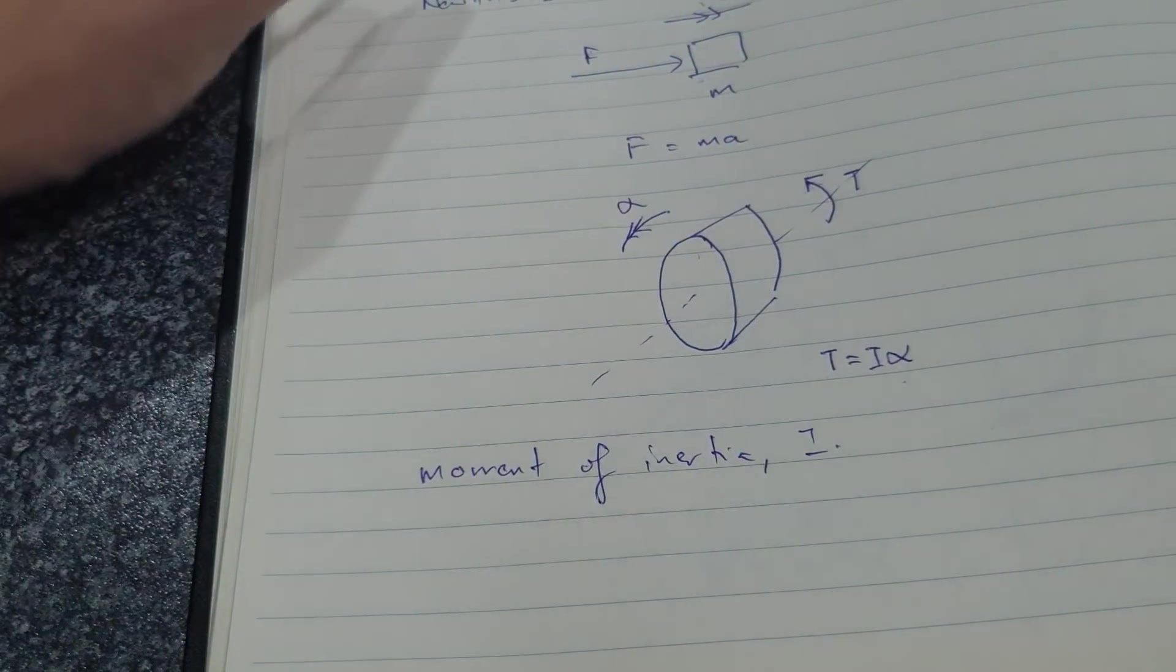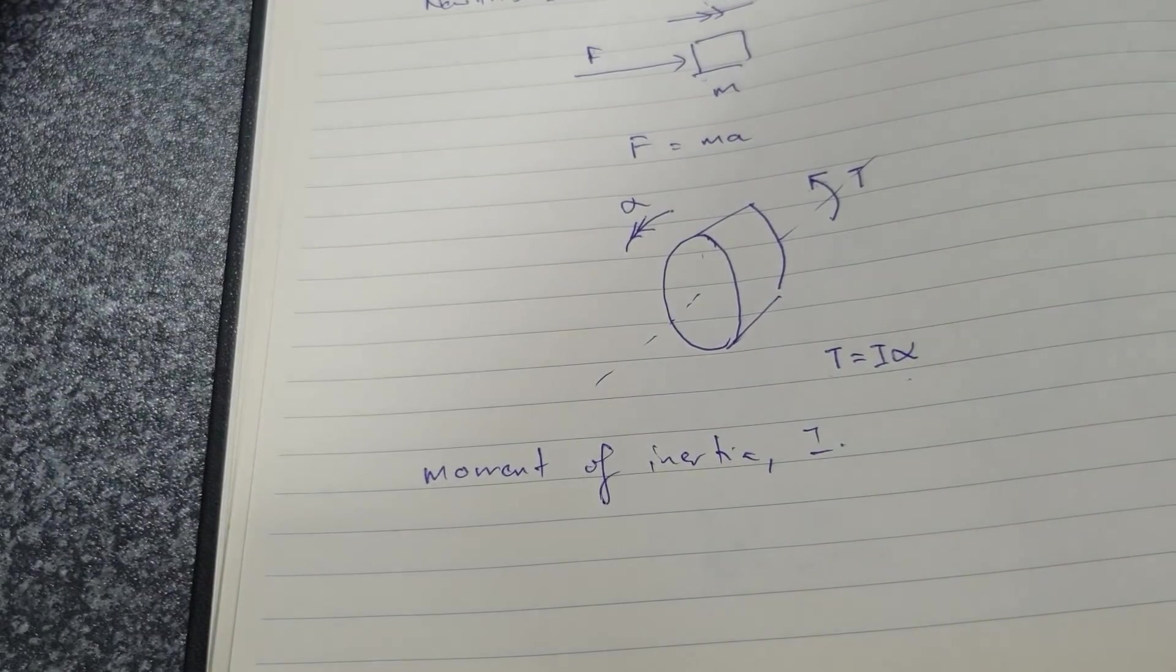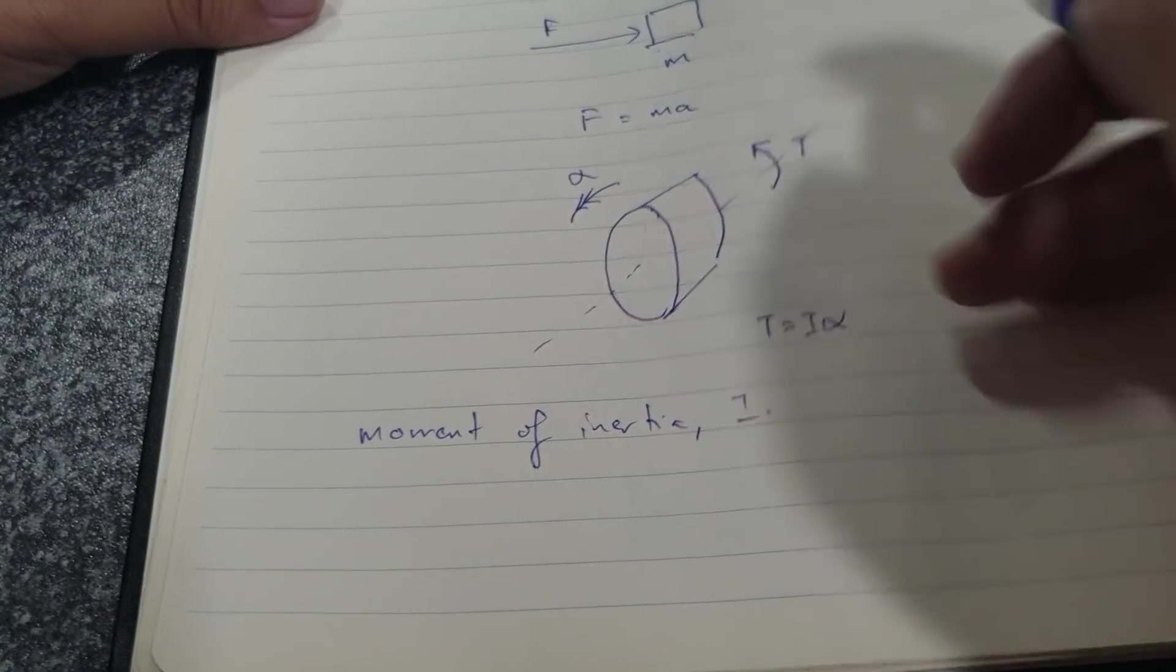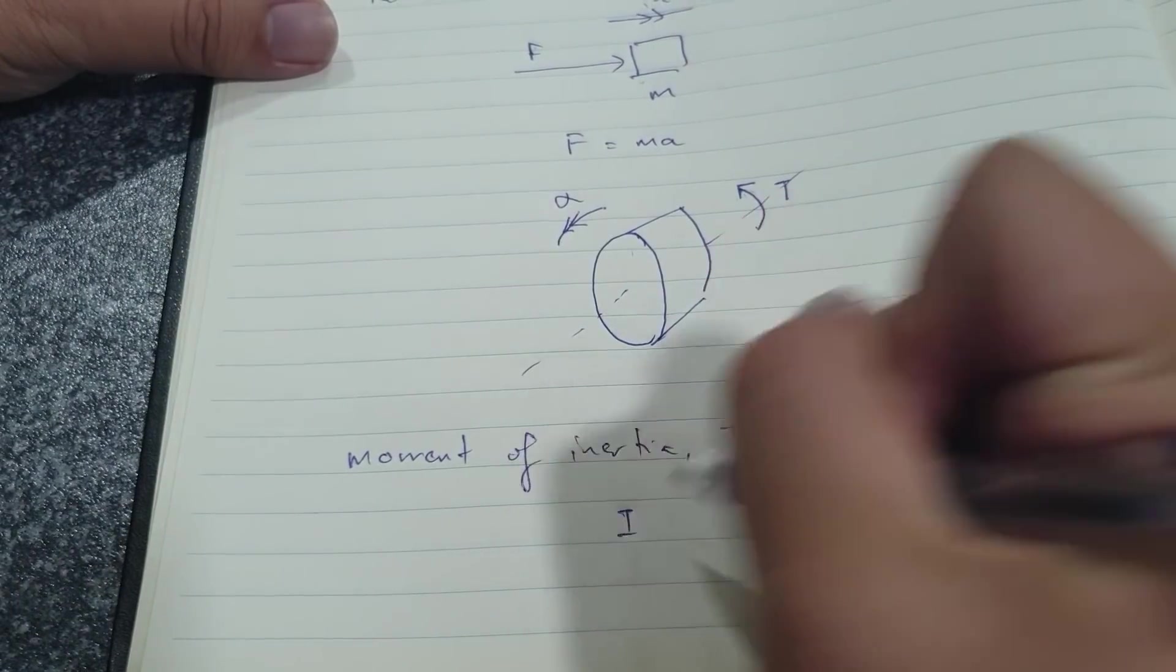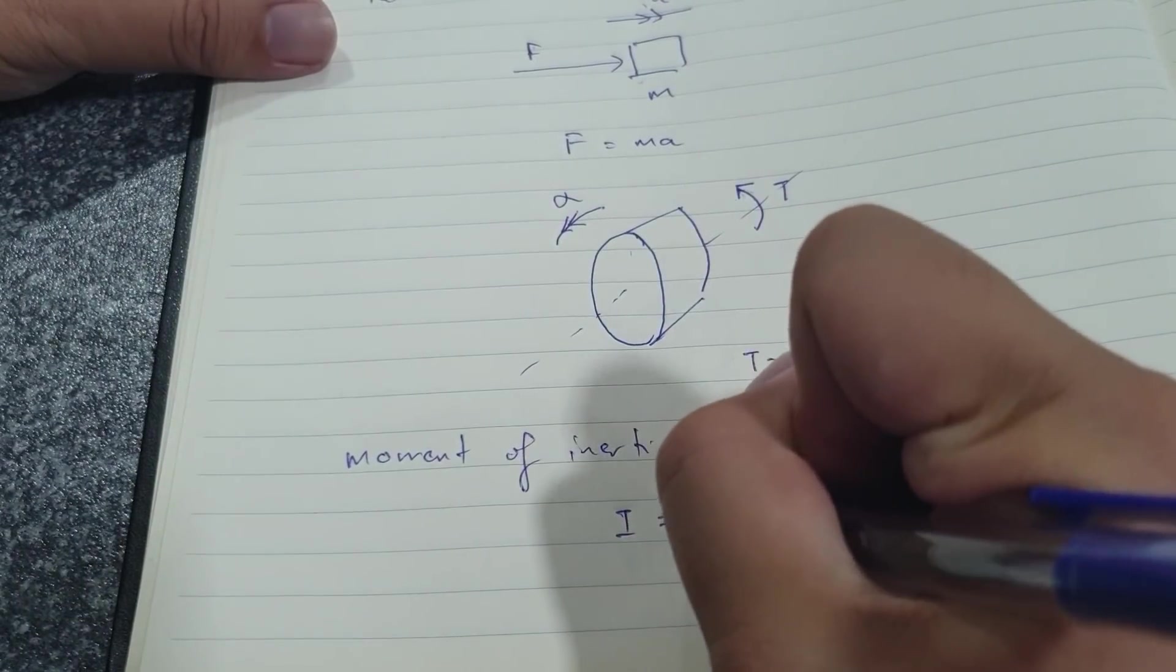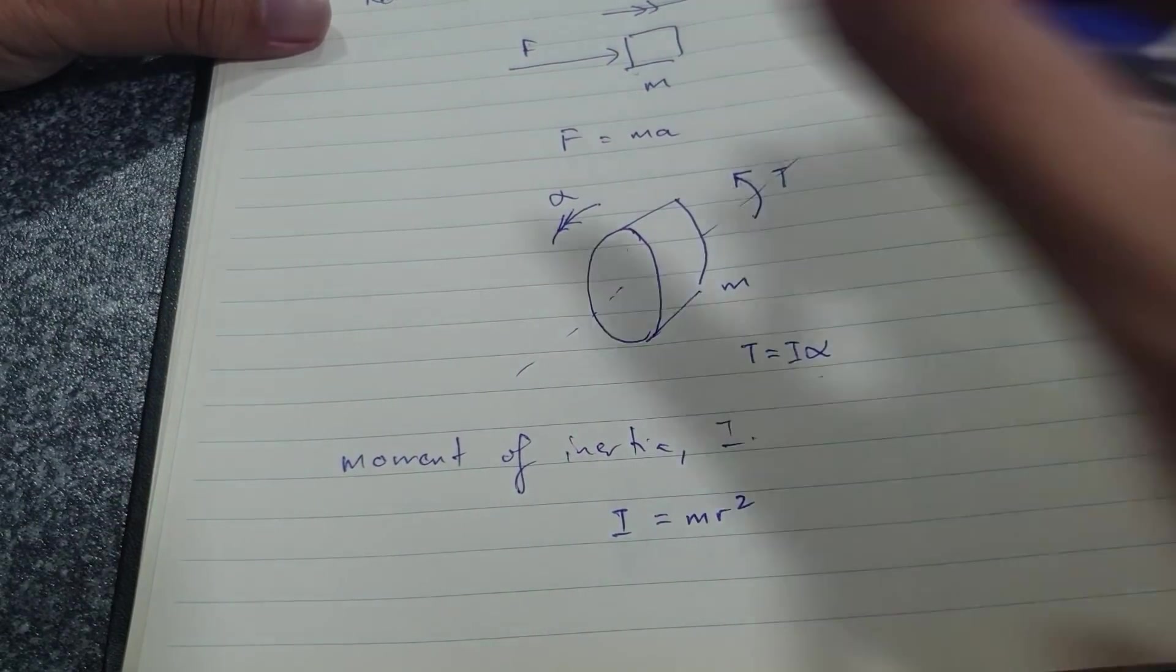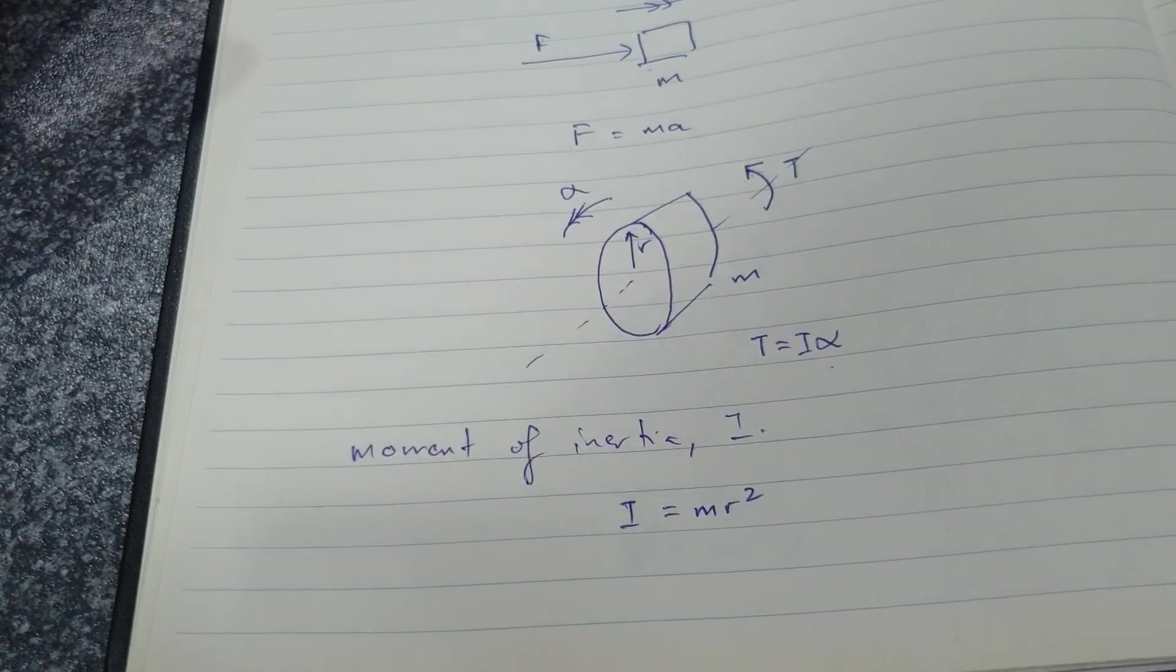Okay, moment of inertia, simply put, you can describe it as the rotational mass of an object about a given axis. So physicists have worked out that in the case of a cylinder, your moment of inertia in this system is I equals to mr² where m is the mass of the cylinder and r is the radius of the cylinder.